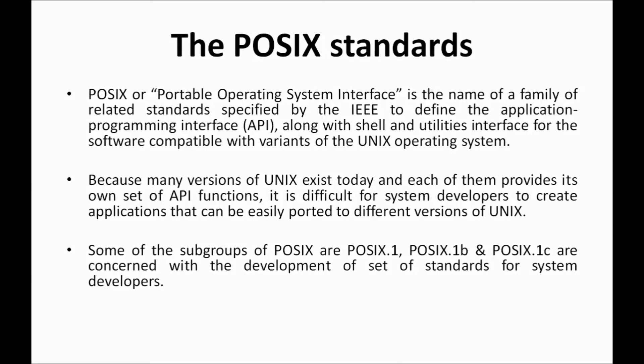Many versions of UNIX exist today — for example, Fedora and Ubuntu. Each UNIX version provides its own set of API functions, which makes it difficult for system developers to create easily portable applications. However, portability can still be achieved — it is not impossible. Along with POSIX standards, subgroups of POSIX are also defined: POSIX.1, POSIX.1b, and POSIX.1c.